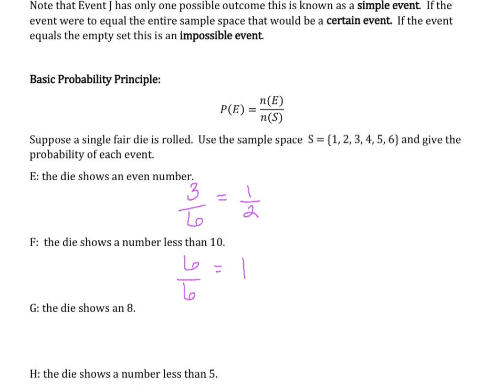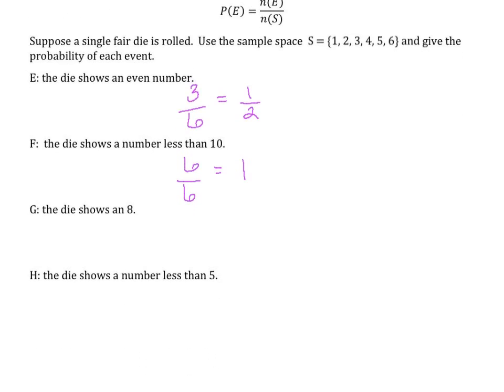What about if the die shows an eight? Again, they have six outcomes. Of those six outcomes, how many are eight? Well, zero because there is no eight. So the probability is zero that we'll get the number eight.